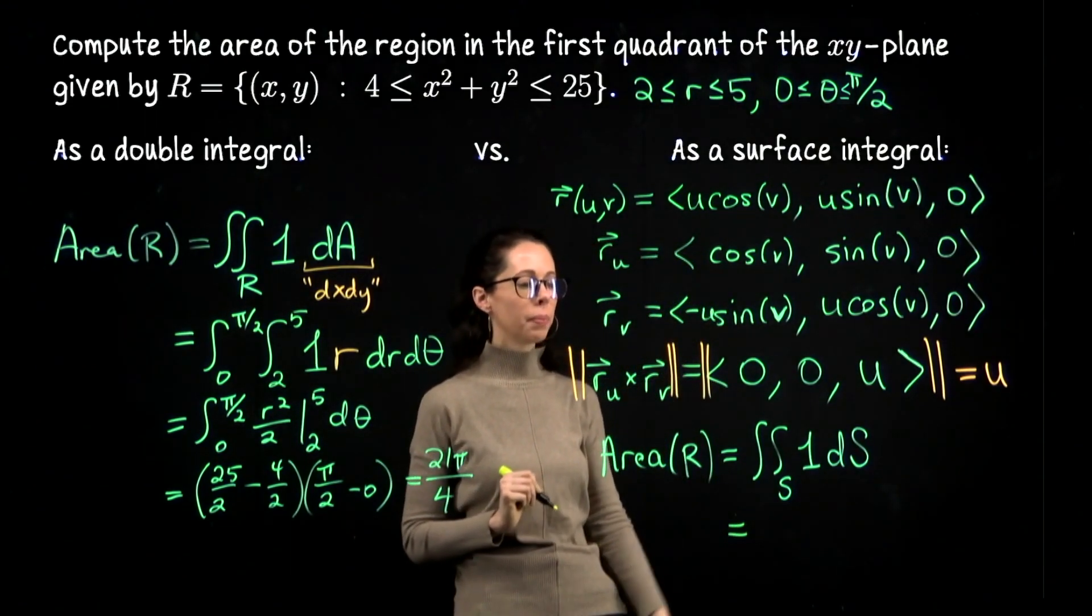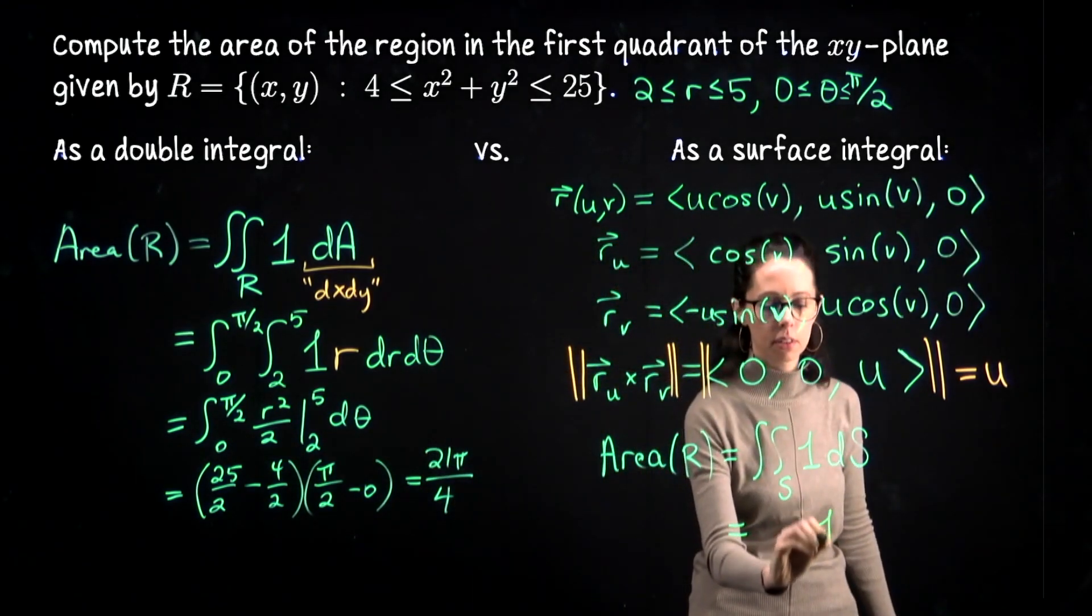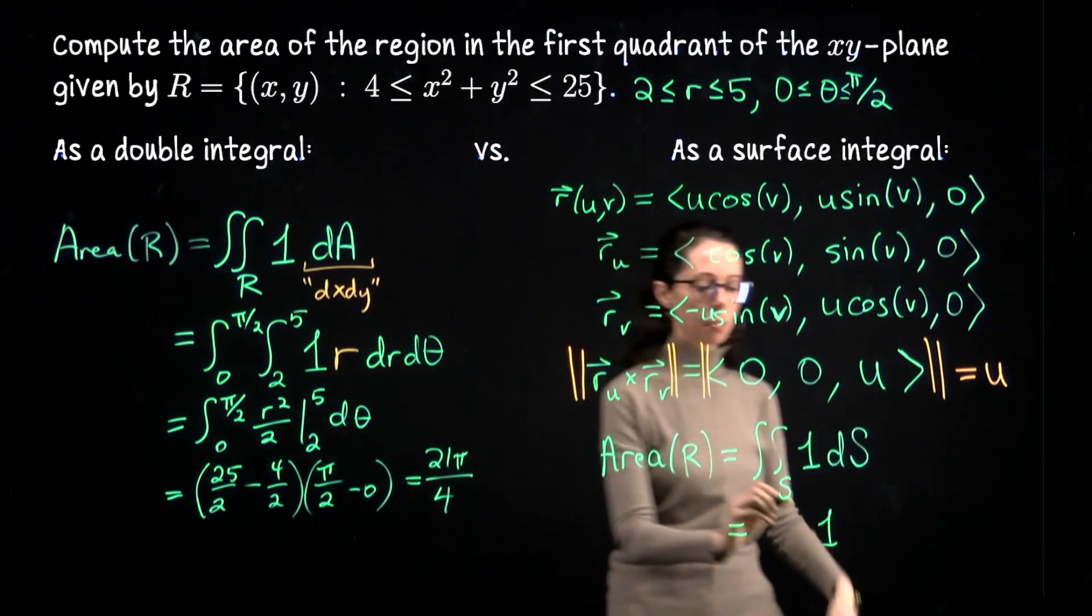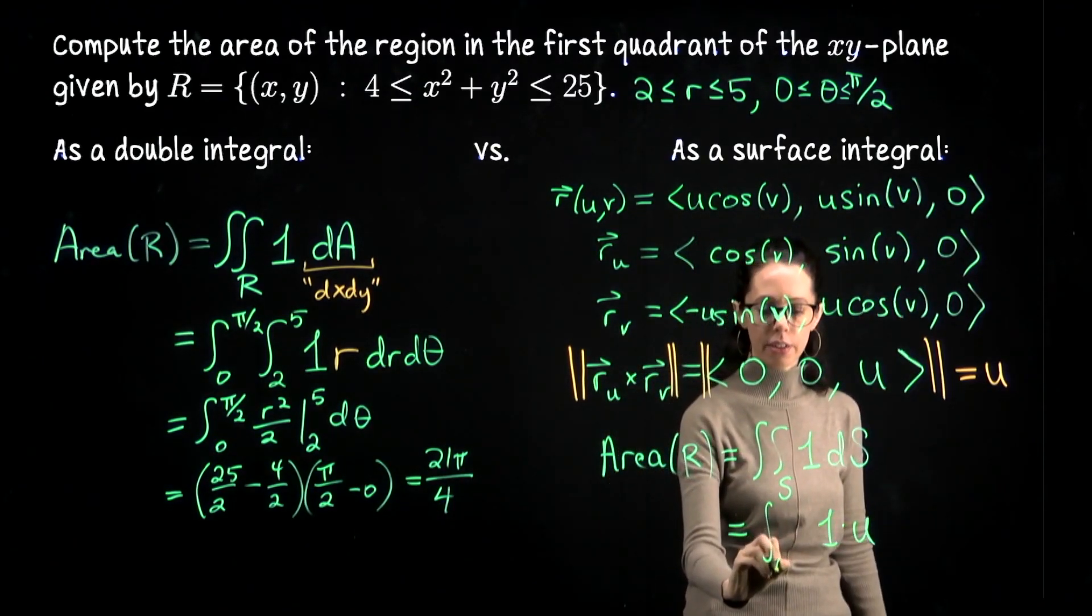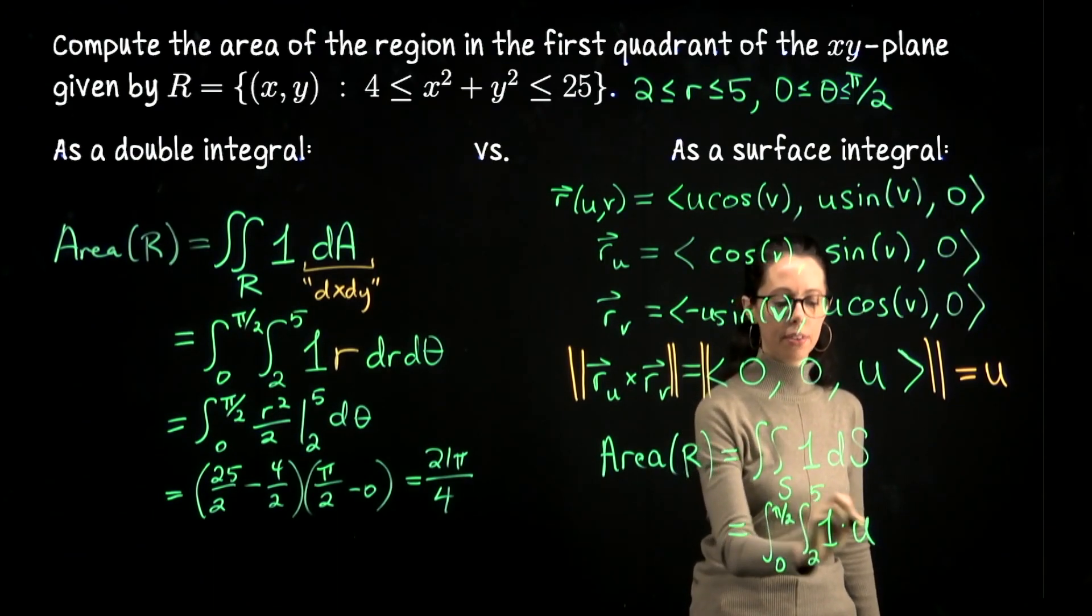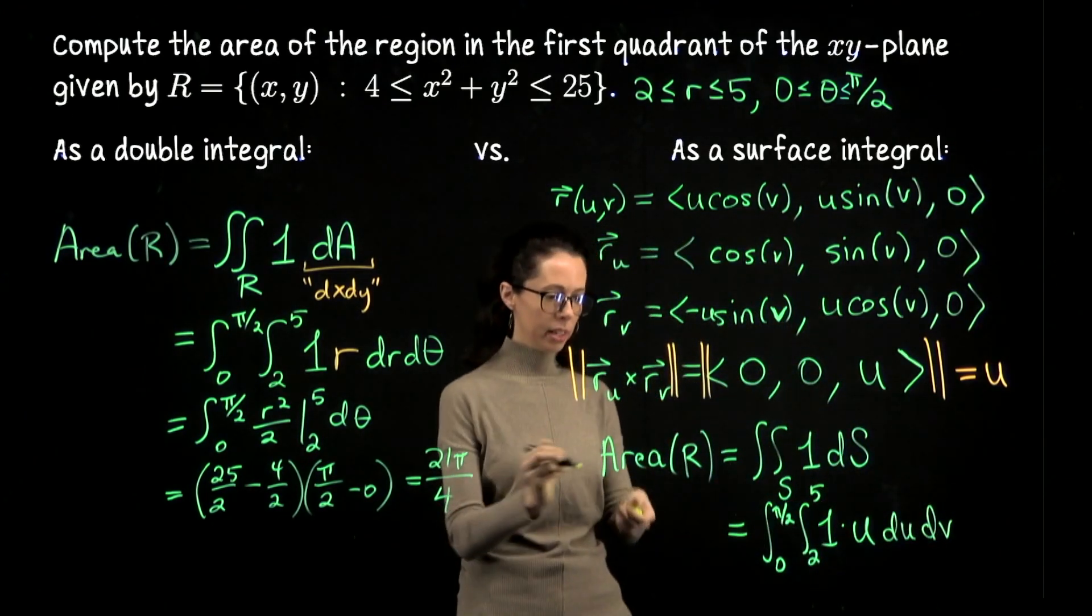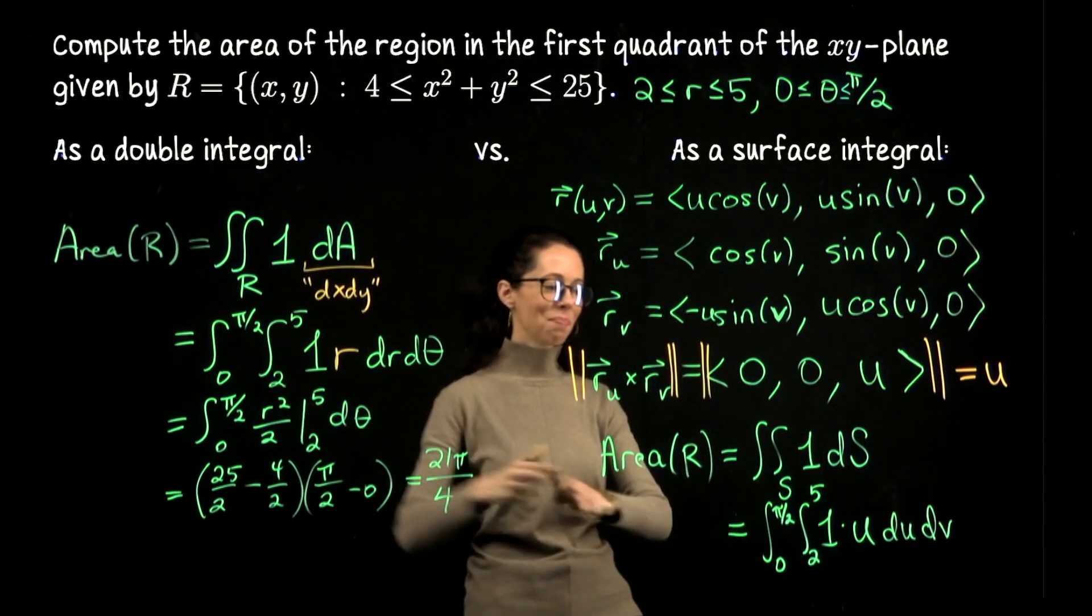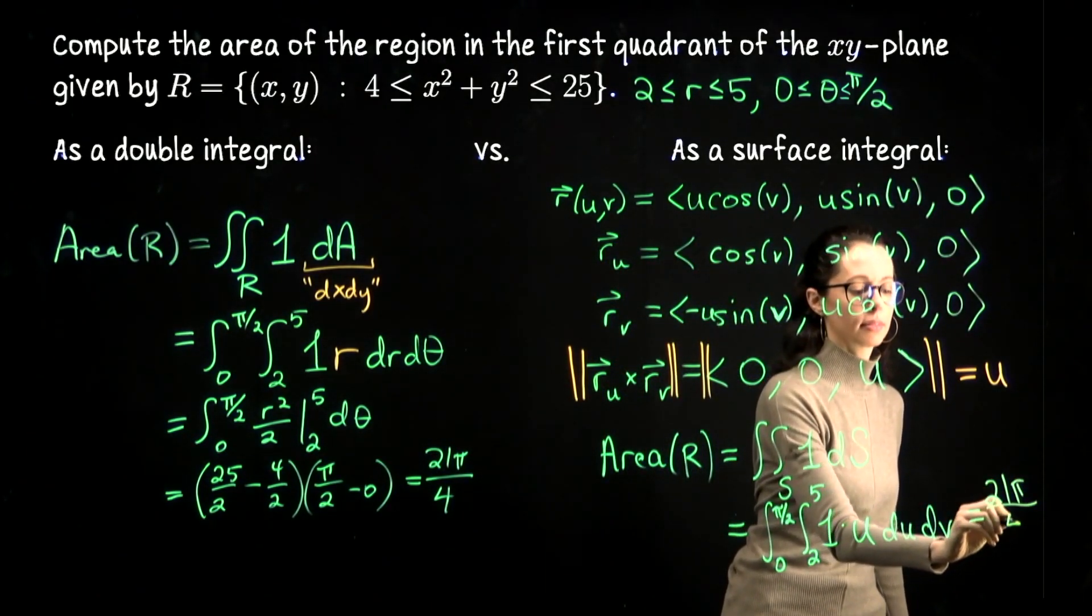What we do is we evaluate this integrand on the parametrization, but the integrand is a constant 1. We then multiply that by the length of this cross product, that's going to multiply by u. Now we're going to integrate this across the parameters, so for v that's 0 to π/2, for u it's 2 to 5, and then du dv. And now we can stop, because while the letters might be different, this is otherwise the same integral as here. So we just happen to know it's 21π/4.